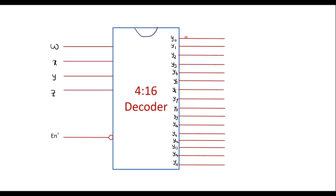The binary representations at each output are: Y0 is 0000, Y1 is 0001, Y2 is 0010, Y3 is 0011, Y4 is 0100, Y5 is 0101, Y6 is 0110, Y7 is 0111, Y8 is 1000, Y9 is 1001. There is a decimal representation, and we write the corresponding binary for each.